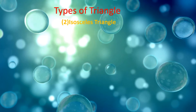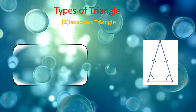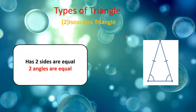Number two: isosceles triangle. An isosceles triangle has two sides equal in length and two angles equal in measure.